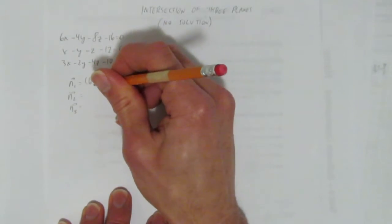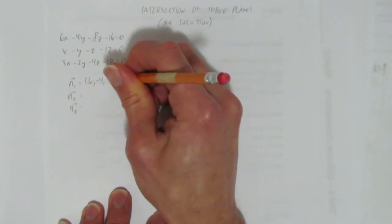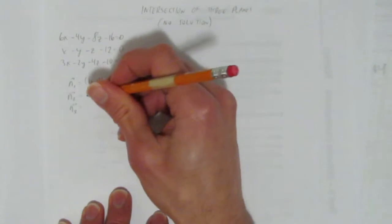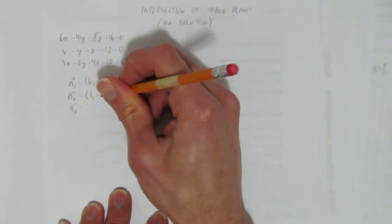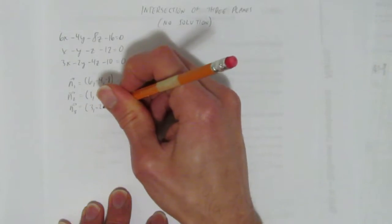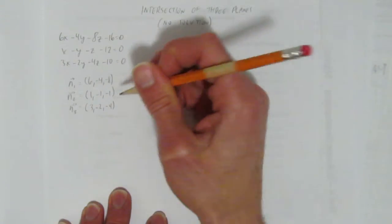Well, the normal vectors are 6, negative 4, negative 8, just looking at the components of the x, y, z. And I got 1, negative 1, negative 1, and 3, negative 2, negative 4.